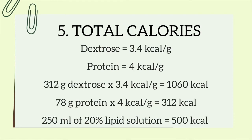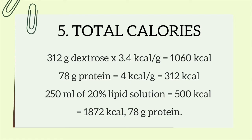Now we want to figure out how many calories this entire thing will give us. The kcals per gram of dextrose is a little different than normal carb calculations — for TPN, every gram of dextrose equals 3.4 kcals. Protein is the same as normal: 4 kcals per gram. To find kcals from dextrose, multiply 3.4 times 312 grams of dextrose, which gives us 1,060 kcals. For protein, multiply 4 times 78 grams, giving 312 kcals. Adding 500 kcals from the 250 mL 20% lipid emulsion, that gives us a total of 1,872 kcals and 78 grams of protein.